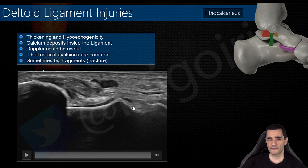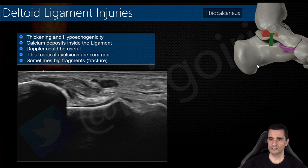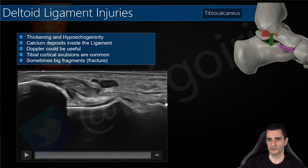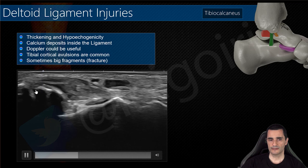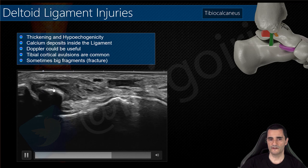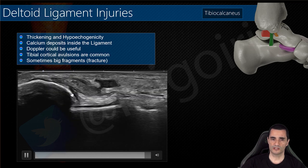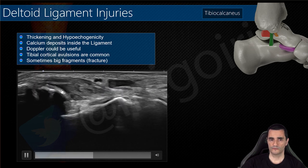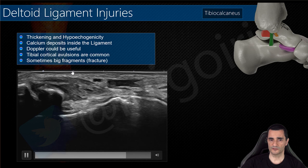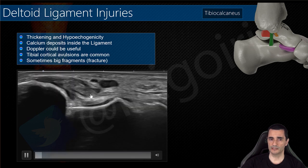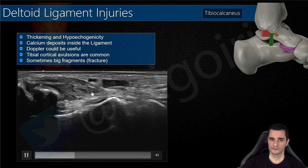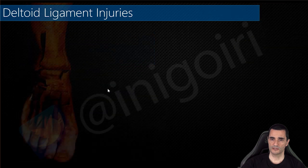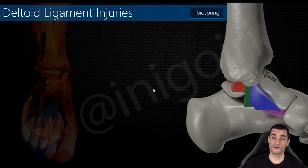This is another example — not the tibiocalcaneal but the tibionavicular ligament — included to remind that sometimes the avulsion will be very large and we are talking about a small fracture. This is a bone fragment of one centimeter at the medial malleolus. Be careful because sometimes we will be talking about a fracture.